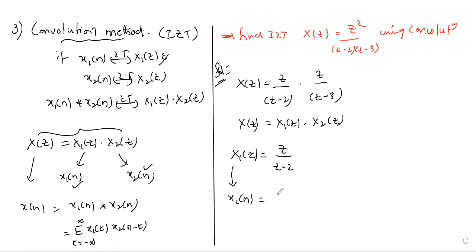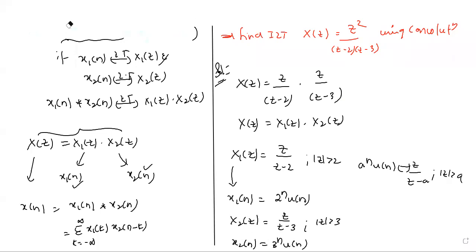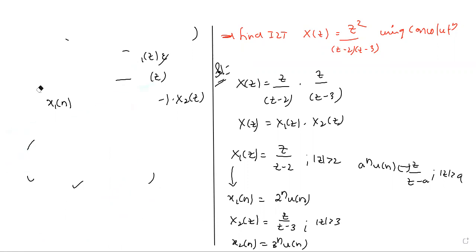What is X1 of n? It is A to the power n times u of n. Because the Z-transform of A to the power n times u of n is Z divided by Z minus A, where mod Z is greater than A. So here X1 of Z is Z divided by Z minus 2, with ROC mod Z greater than 2 — a causal sequence. And X2 of Z is Z divided by Z minus 3, also causal with mod Z greater than 3. Then X2 of n is 3 to the power n times u of n.